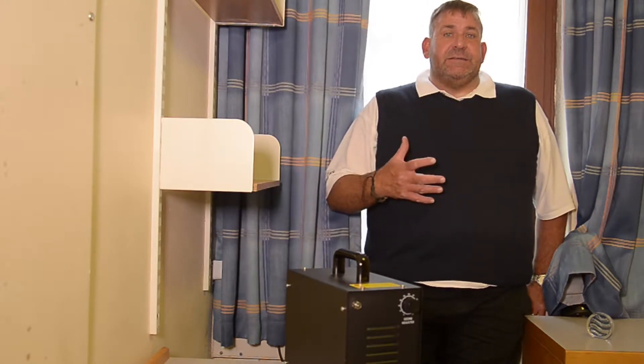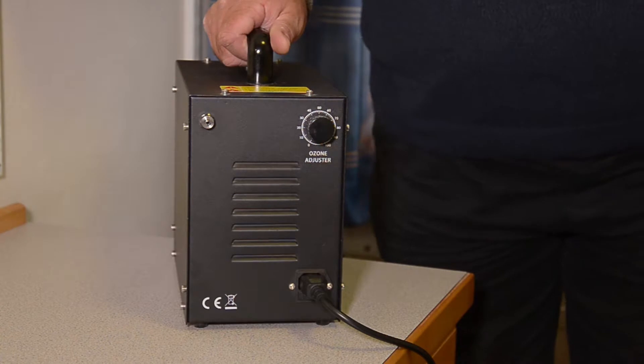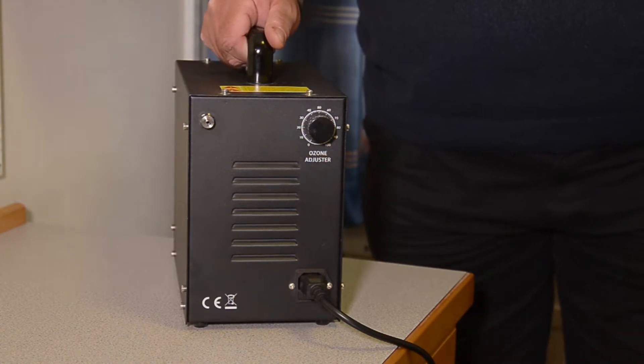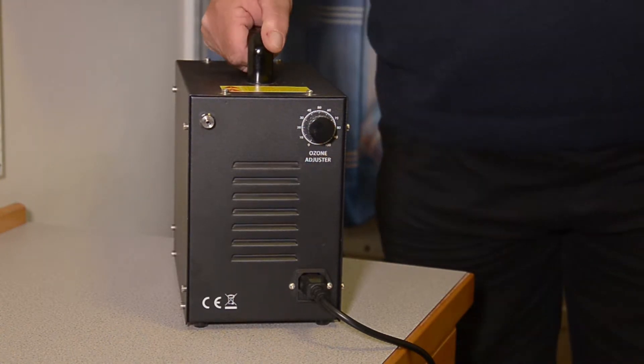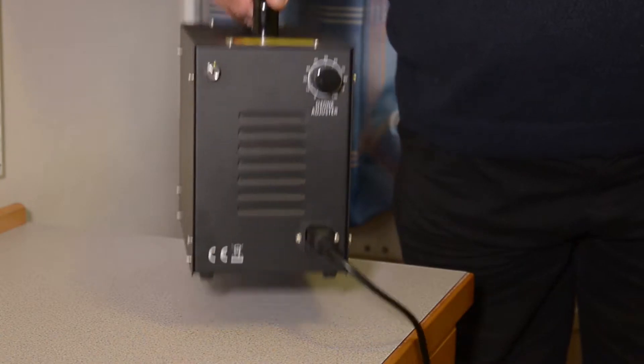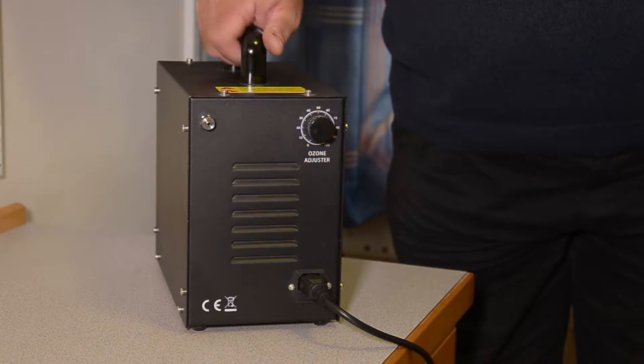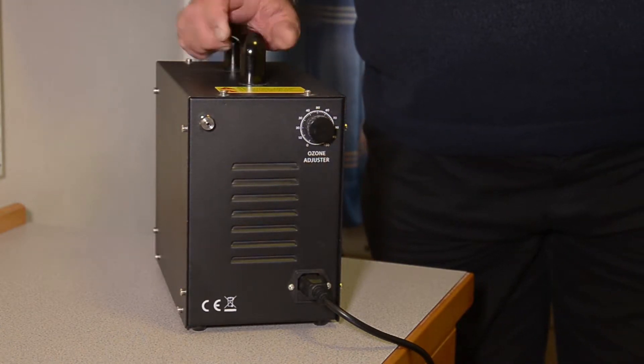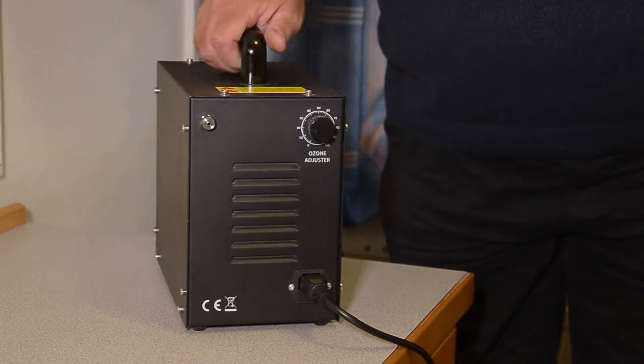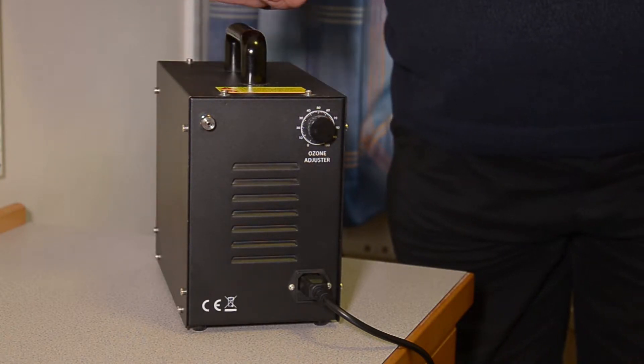So rather than having to instigate a shock treatment every time, we would recommend using the small unit on a more regular basis, which is a 3g ozone machine, which is very light and very portable as you can see. The unit is very compact. It can be used in any environment really to kiss the air once you've had a shock treatment and you've gone to the extent of destroying the mold.